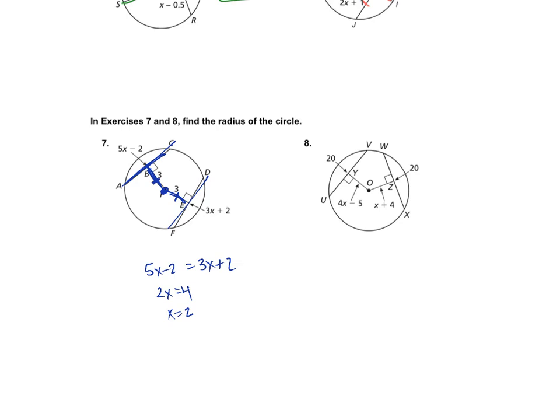And here I'll get 2X equals 4, so X is 2. Since X is 2, they want us to find the radius of the circle. So this is my radius. This piece we know is 3. We know that this is going to bisect it. So if X is 2, this length right here will be 5 times 2 is 10 minus the 2,